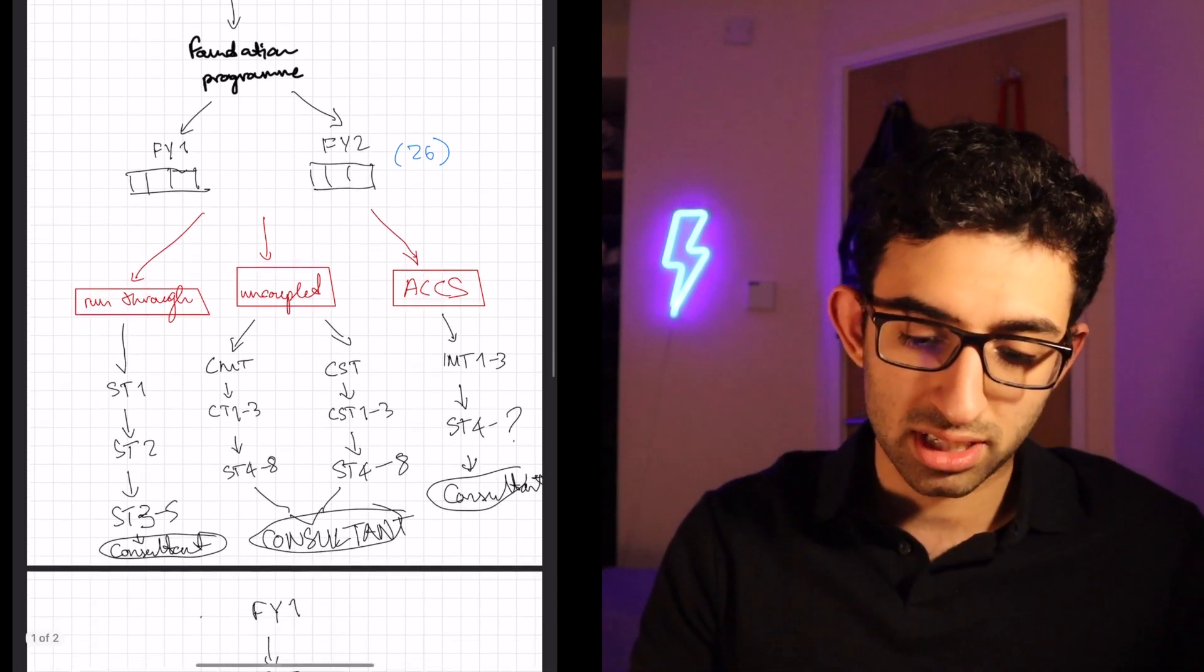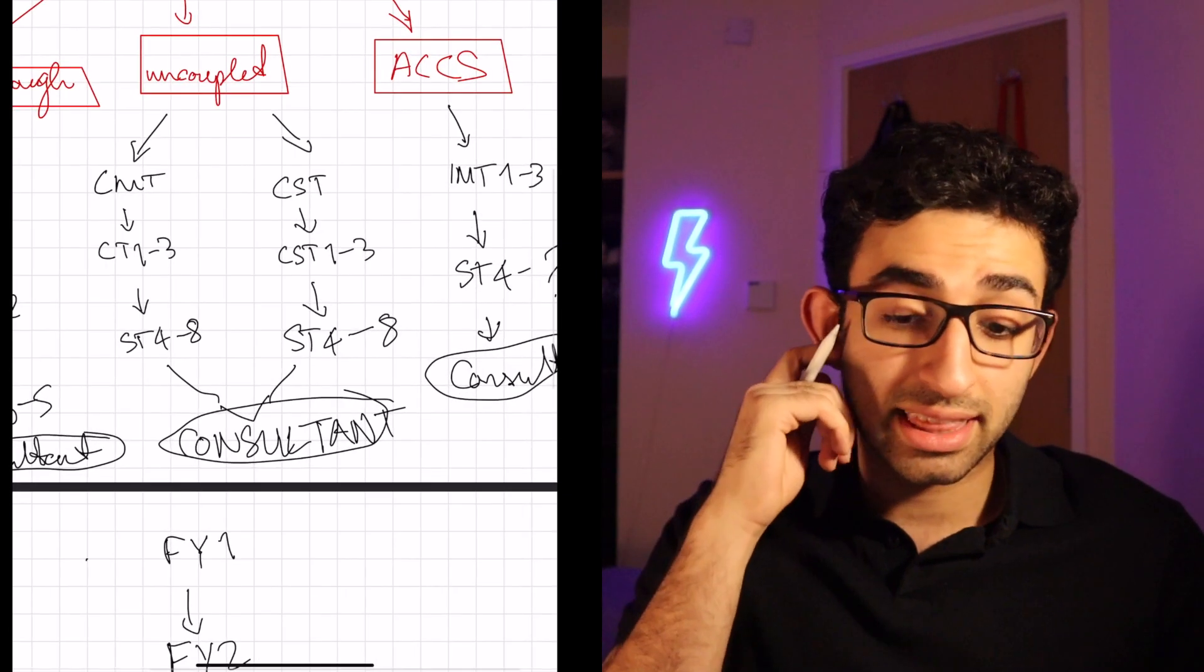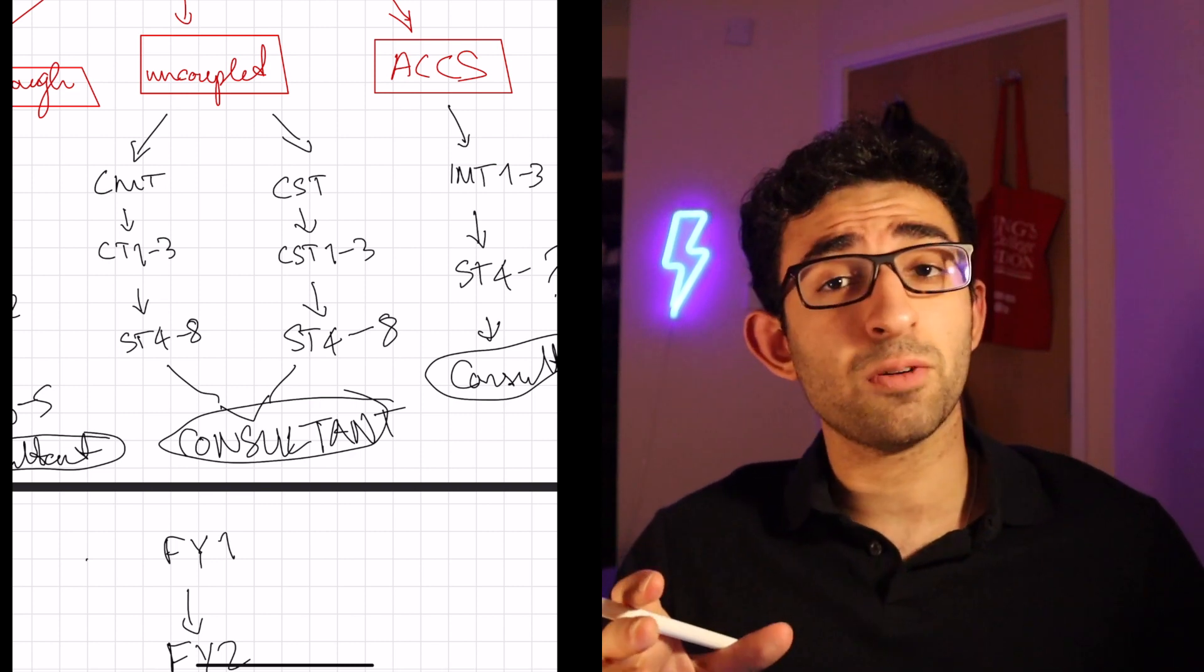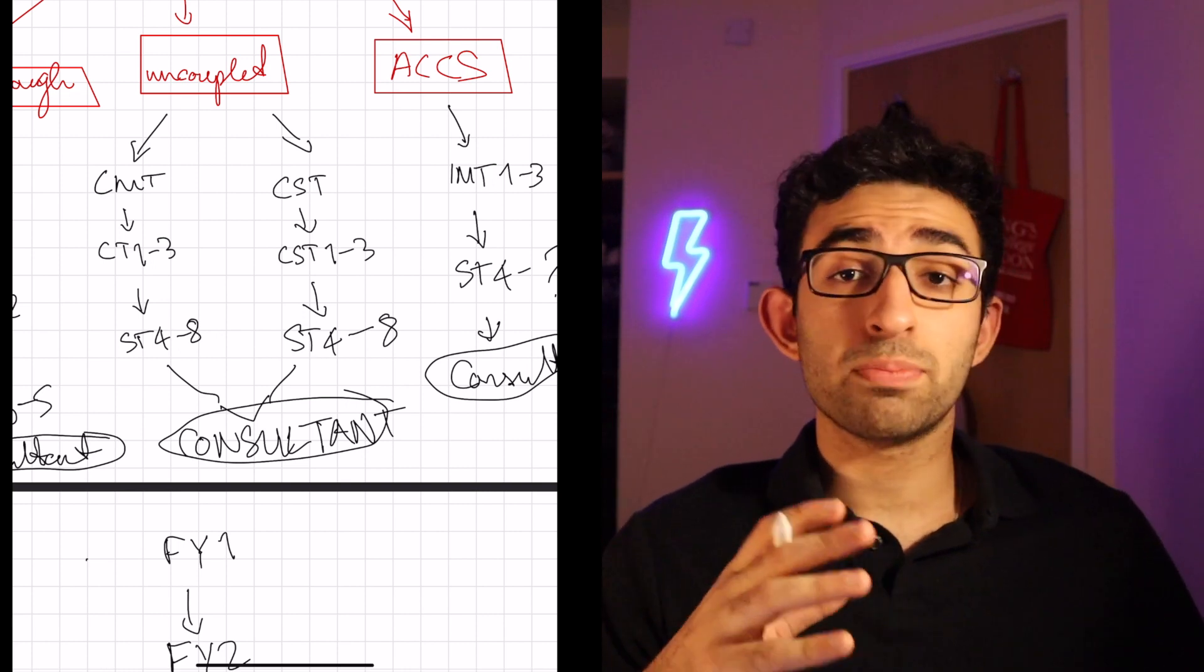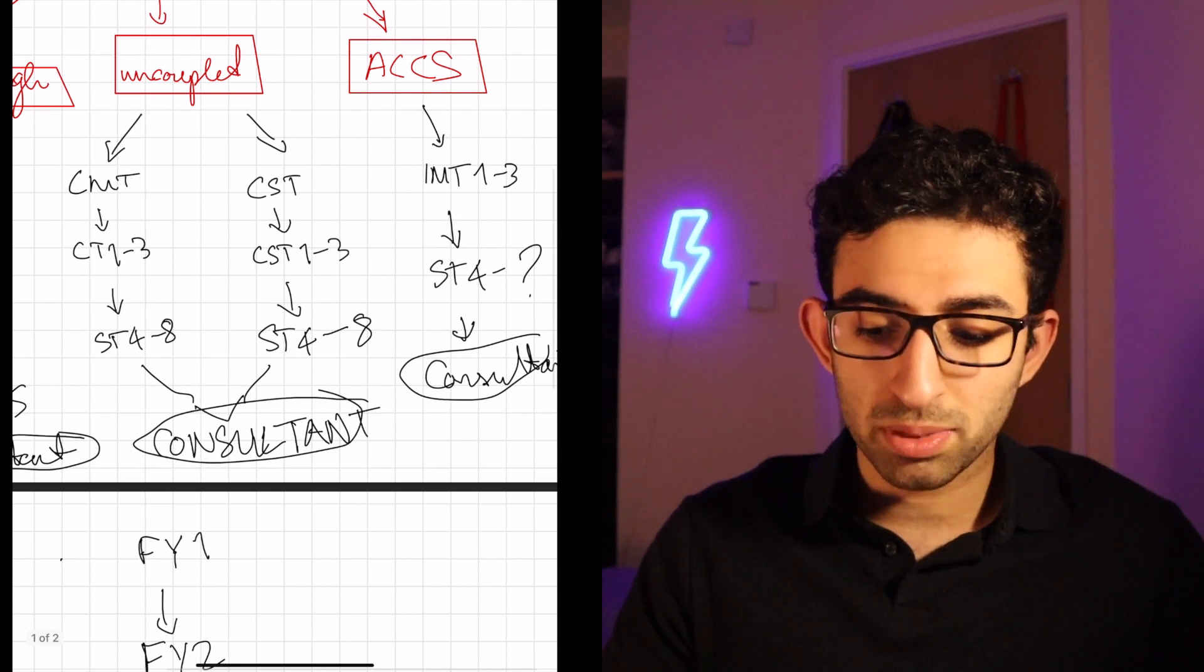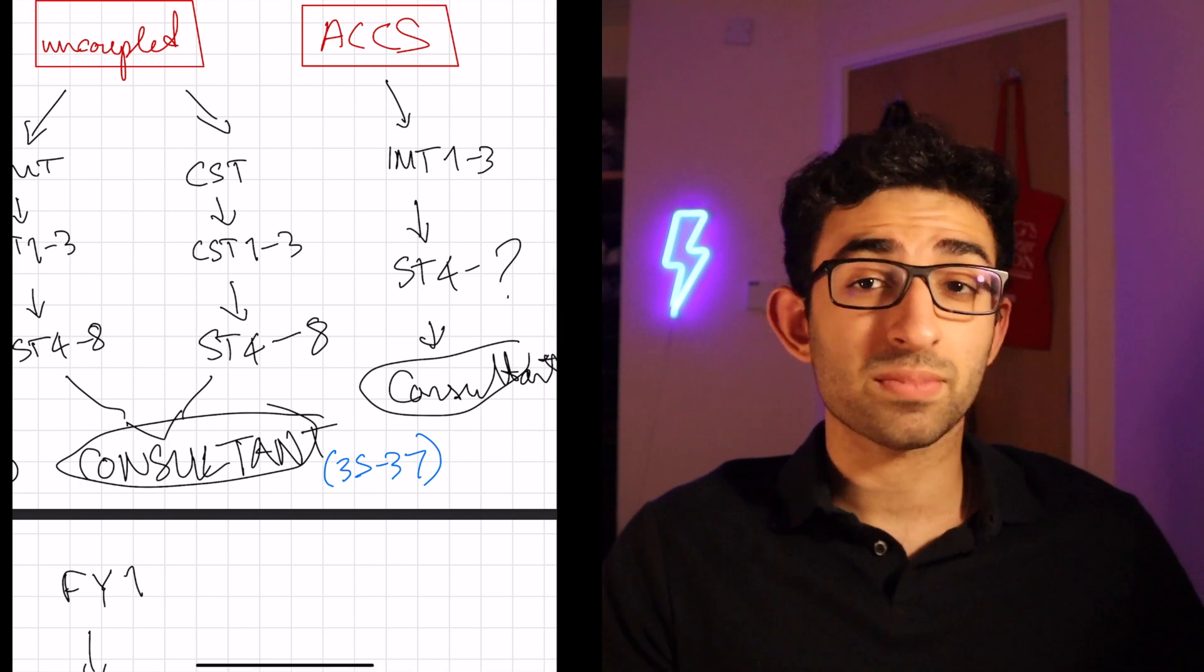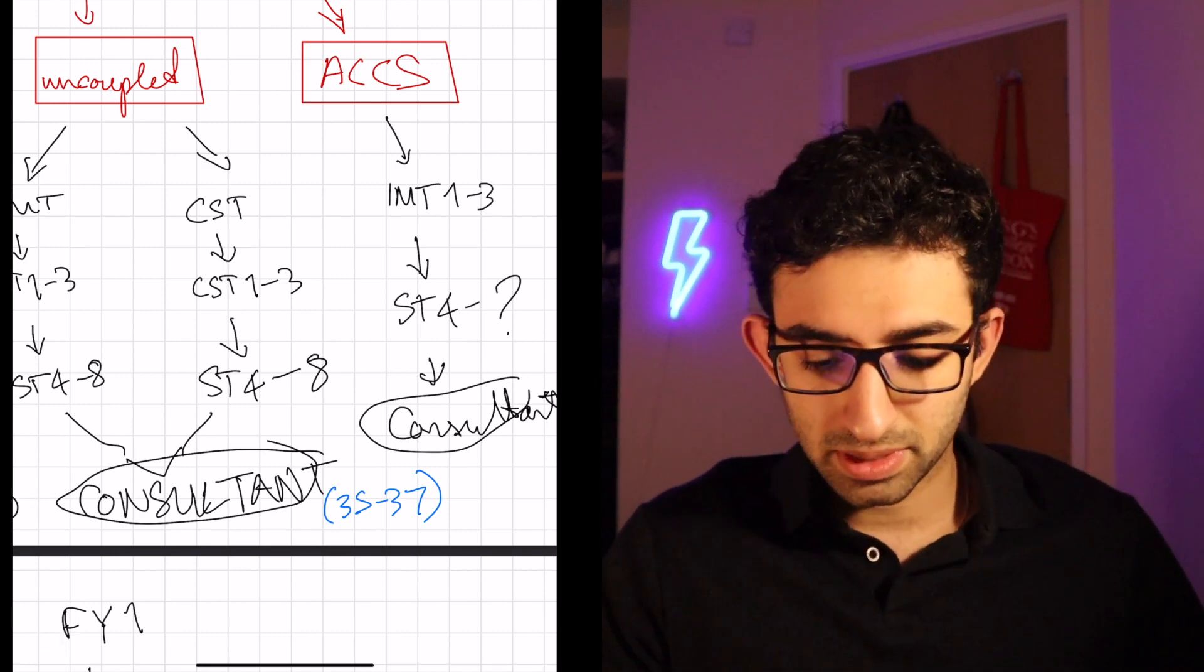So, let's go back to the first run-through program, suppose it has 5 specialty training years, like radiology, you'd be 32 as a consultant. At the end of the uncoupled program, which has 10 years of training, you'd technically be 34, but for many specialties, you need to do an MD or a PhD to be competitive for a position as consultant. So, I'd really say you'd be somewhere between 35 and 37 as a consultant doing the uncoupled program. In acute care common stem, it's similar, similar to the other two, something around that, your mid-30s.